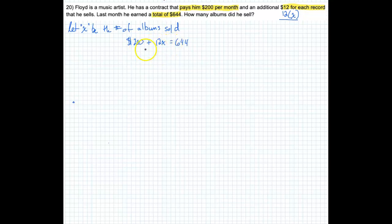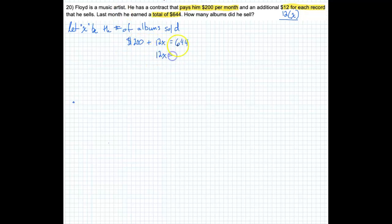He sold enough that his total was $644. I could rewrite this, but it doesn't really matter. So I've got: 12X plus 200 equals 644.